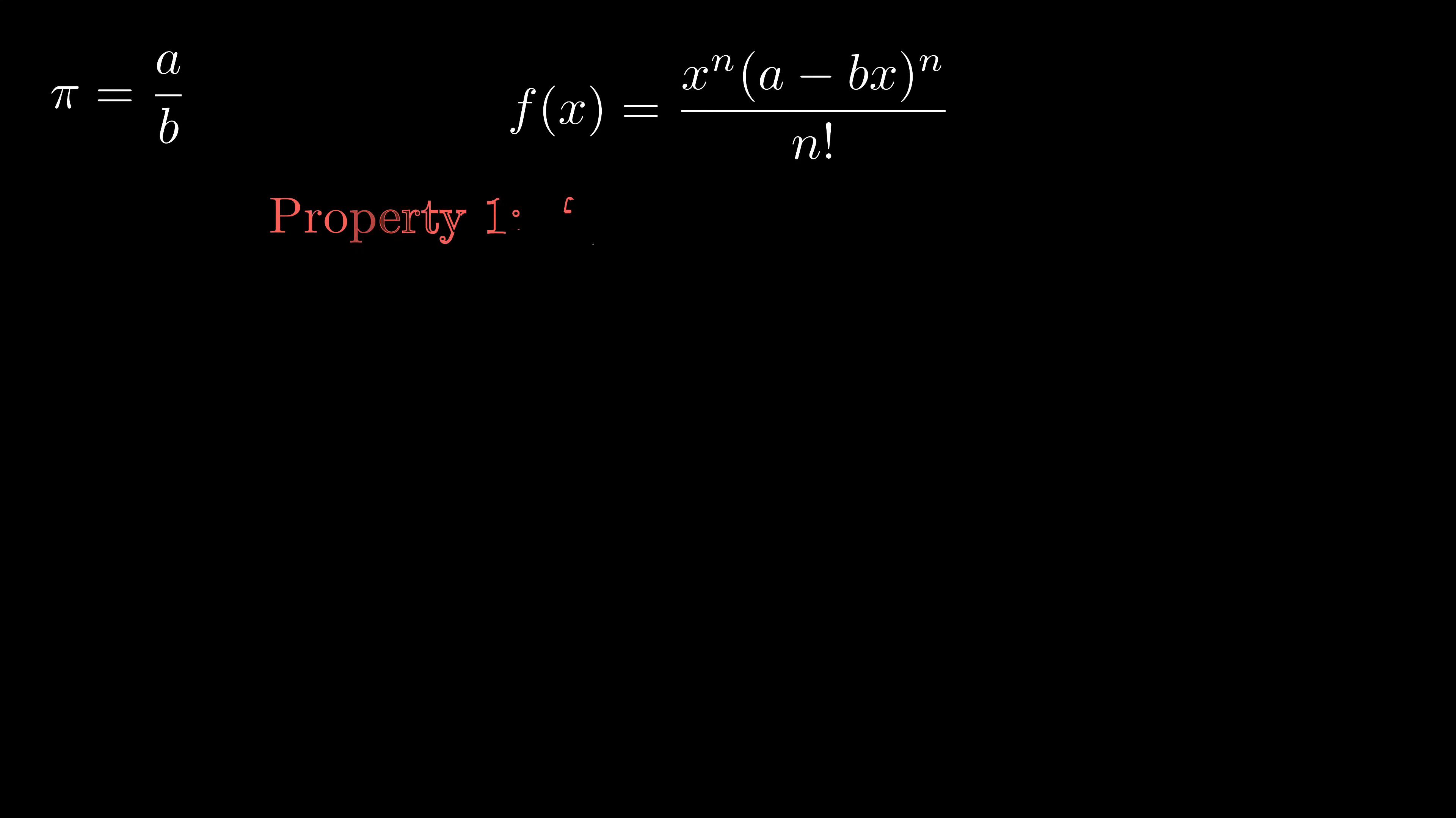The first property states that f(0) and arbitrary order derivative at 0 are all integers. This property seems very strong, but its proof is actually not that hard. If we expand f(x) as a polynomial of x, the lowest order is n while the highest order is 2n. We don't care about the exact values of c1 up to cn. All we care is that they are integers.